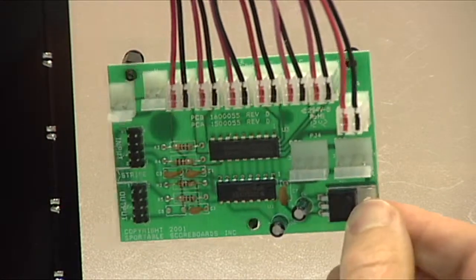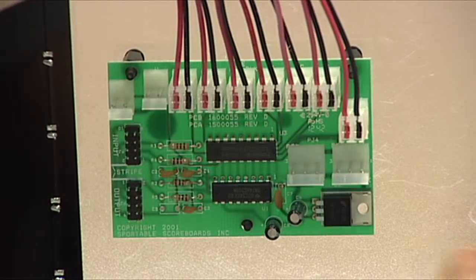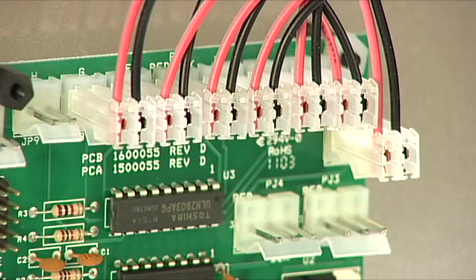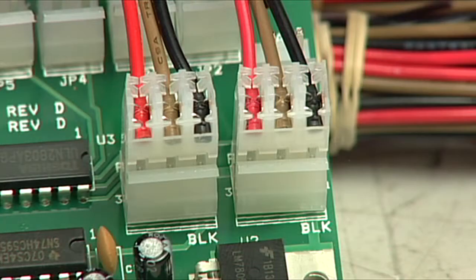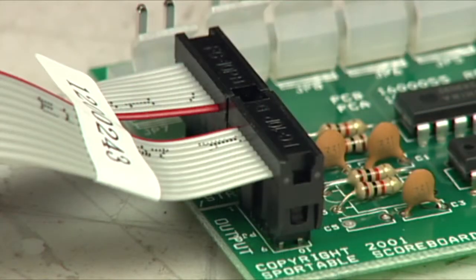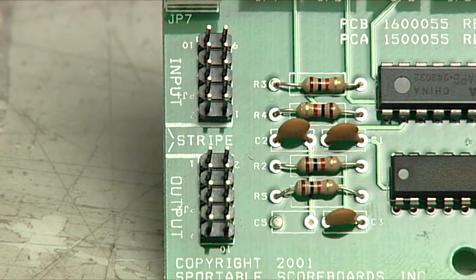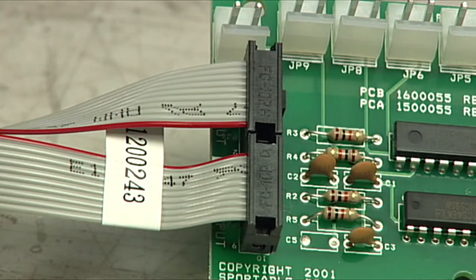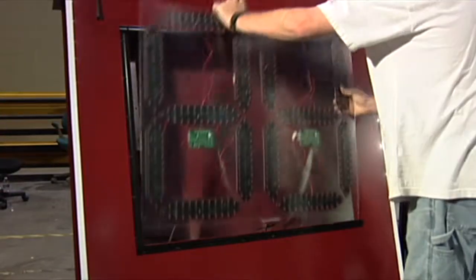Reattach the new driver to the digit using these nylon nuts. Attach all the vane connector cables, the power cables, and the ribbon cables to the driver. Ensure the red stripe on the ribbon cables line up with the stripe printed on the driver board. Reattach the digit to the scoreboard.